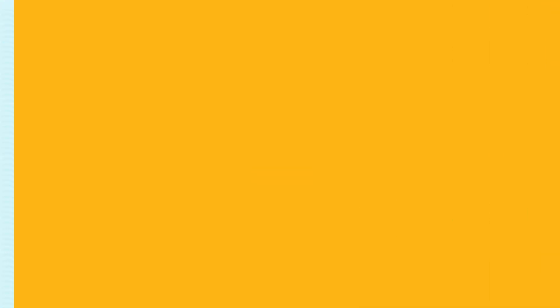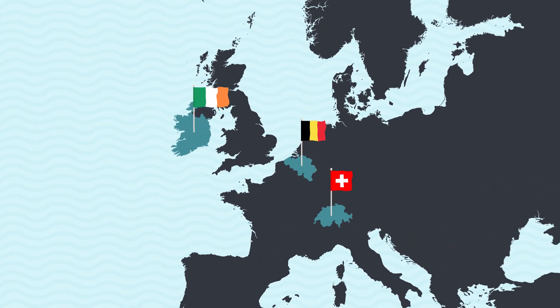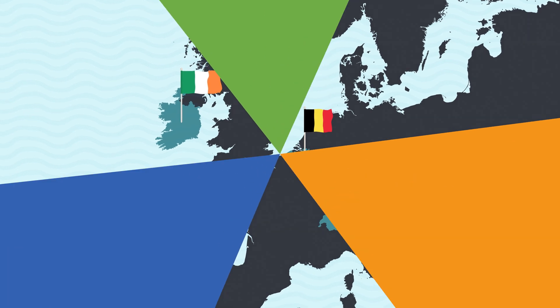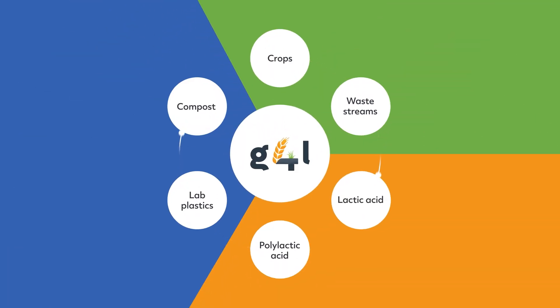Grain for Lab, along with its partners from across Ireland and the rest of Europe, are providing a pathway to a true circular bio-economy for bioplastic production, giving Ireland the opportunity to become a world leader in sustainability.